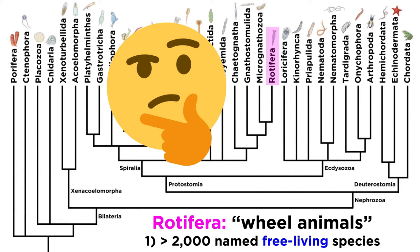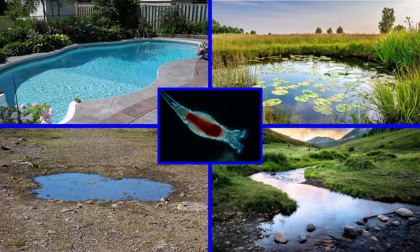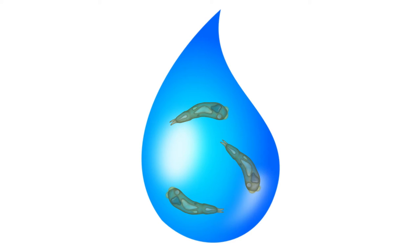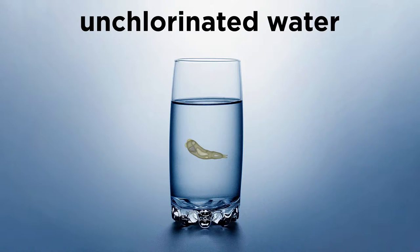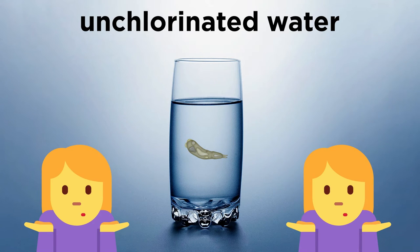Though many people have never heard of them, it's quite likely that everyone watching this video has interacted with them in some capacity numerous times in their lives. Rotifers have been found in nearly every body of water around the globe, from backyard pools to ponds to puddles to lakes and streams, and even individual water droplets. They've even been found to form the nucleus necessary for a drop of rain to form. In fact, they're so common that simply drinking unchlorinated water is likely to result in the ingestion of a few rotifers. Free-living rotifers are harmless and have no deleterious impacts on humans.